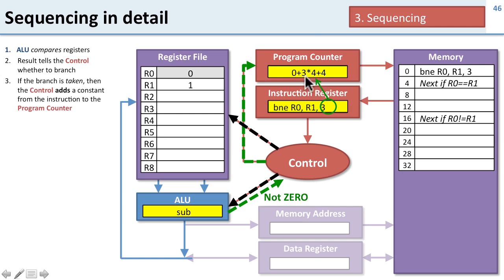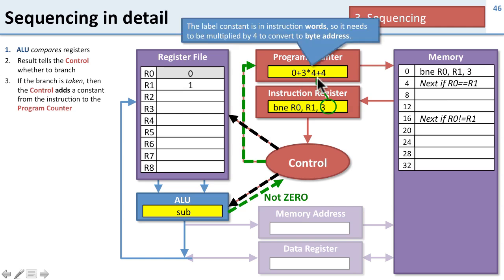We put in this constant as 3 times 4, and then we also add 4 because we always add 4 to go to the next instruction. How do we calculate the final branch address? We take this 3 from the instruction, multiply by 4 to get the number of bytes, then add 4 because we always go to the next instruction. This tells us how far ahead to go. In this case, it's 16 and goes to the next instruction.